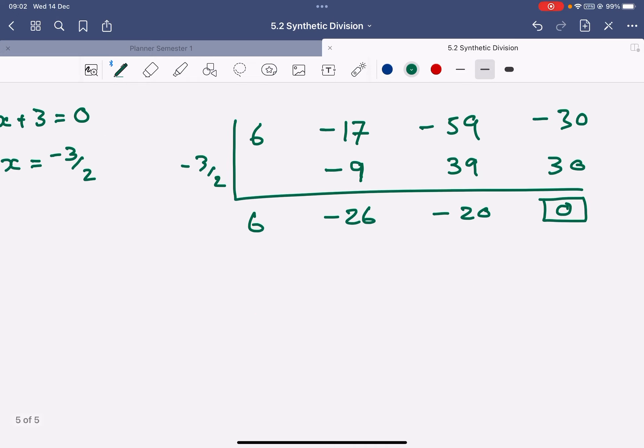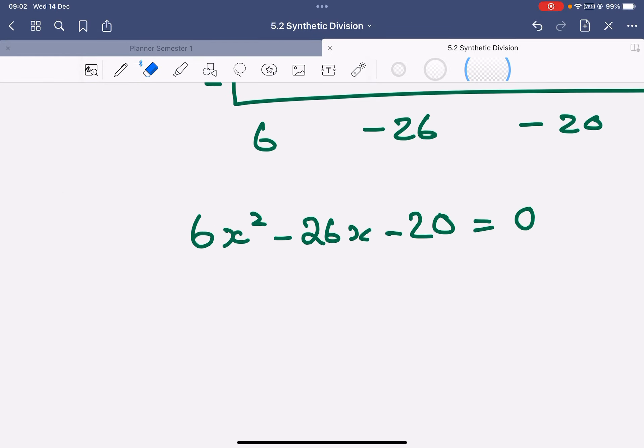But it also tells me that 6x squared minus 26x minus 20, that's also a factor. So actually, rather than it's equal 0, I think it wants the, because it wants the 0s, I'm going to solve that equal to 0.